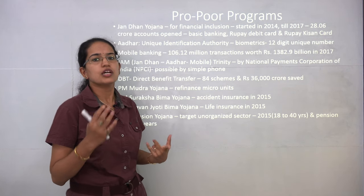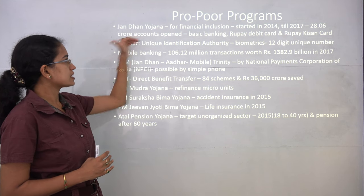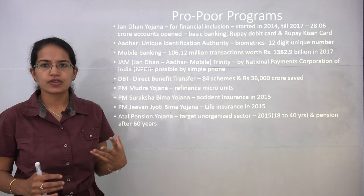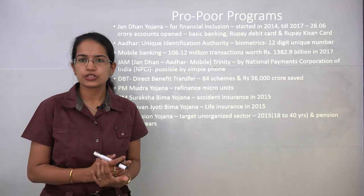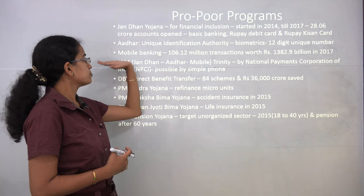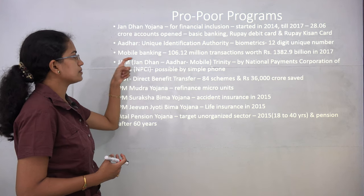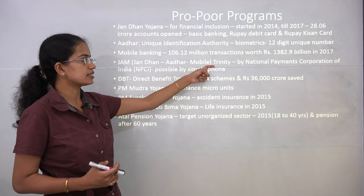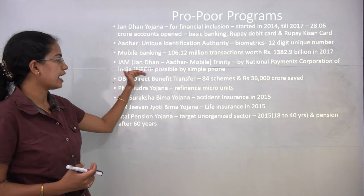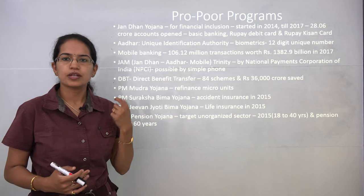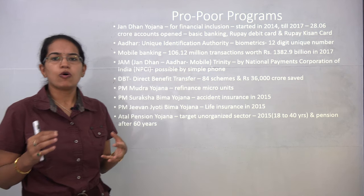Pro-poor programs are very important. Jan Dhan Yojana talks about financial inclusion — opening bank accounts, Rupay debit cards, Rupay credit cards, and Kisan cards. Aadhaar provides a 12-digit unique identification to every individual based on biometrics. Mobile banking, together with Jan Dhan and Aadhaar, constitutes the JAM trinity — Jan Dhan, Aadhaar, and Mobile — released by the National Payments Corporation of India.